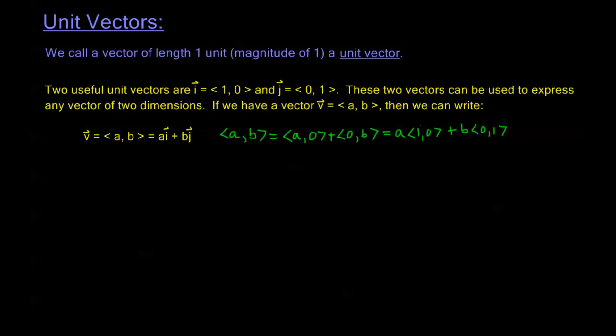If I multiply A through to this vector I get <a,0>, and if I multiply B through to the second vector I get <0,b>, and these are exactly the vectors we just talked about. This first vector that I'm multiplying A to is the vector I, and the second vector that I'm multiplying B to is the vector J.